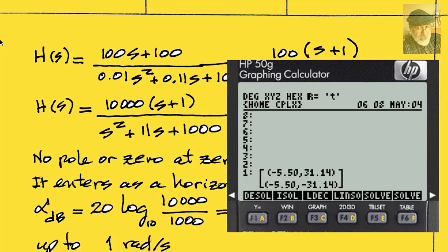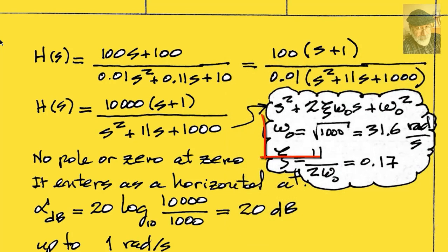We see that it has two complex conjugate roots. The function has a complex conjugate set of poles at where? At the square root of 1,000.